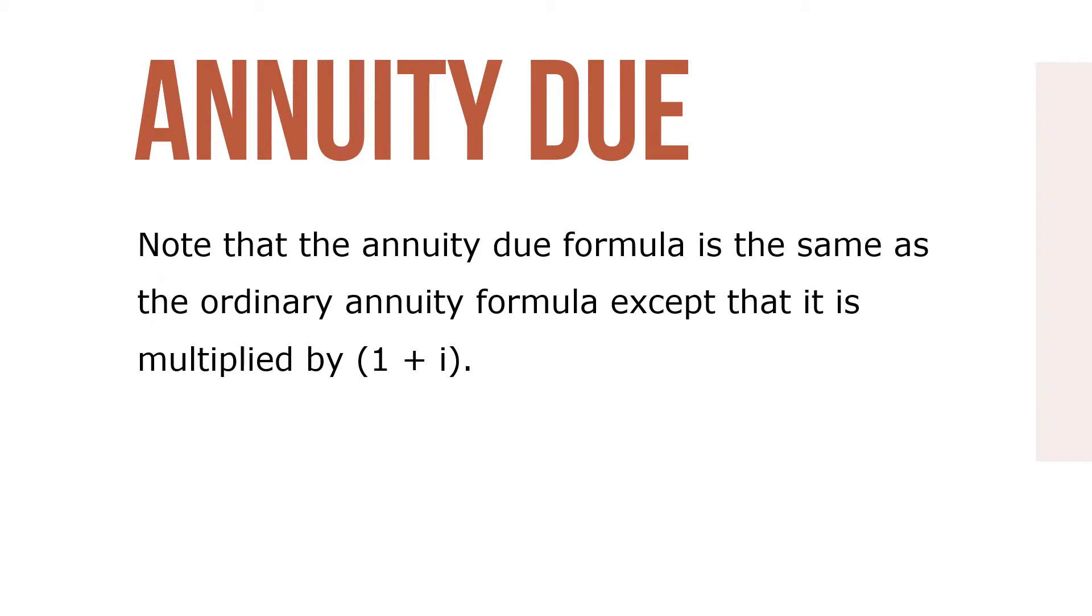Note that the annuity due formula is the same as the ordinary annuity formula except that it's multiplied by 1 plus I. This is to account for the fact that with an annuity due, each payment earns interest for one additional period because payments are made at the beginning of each period, not the end.